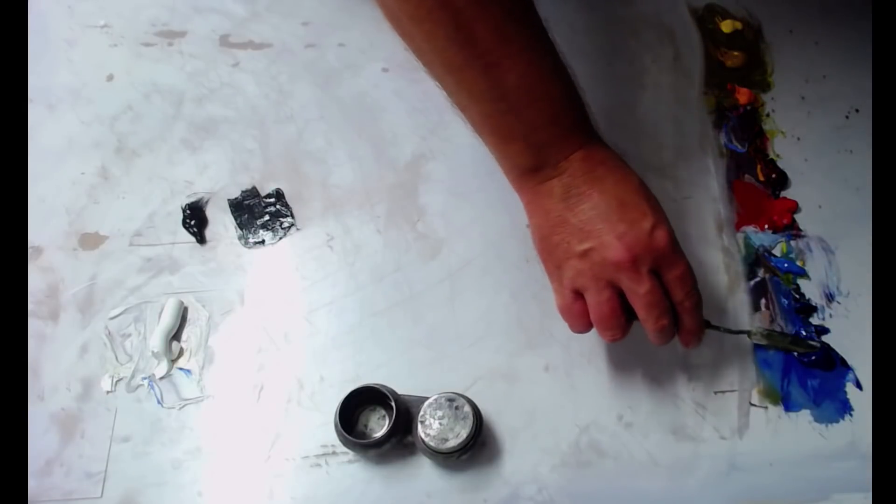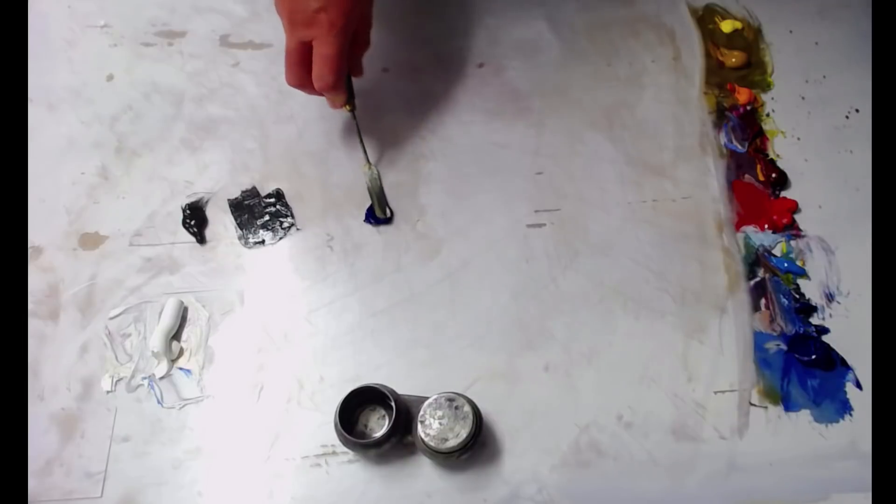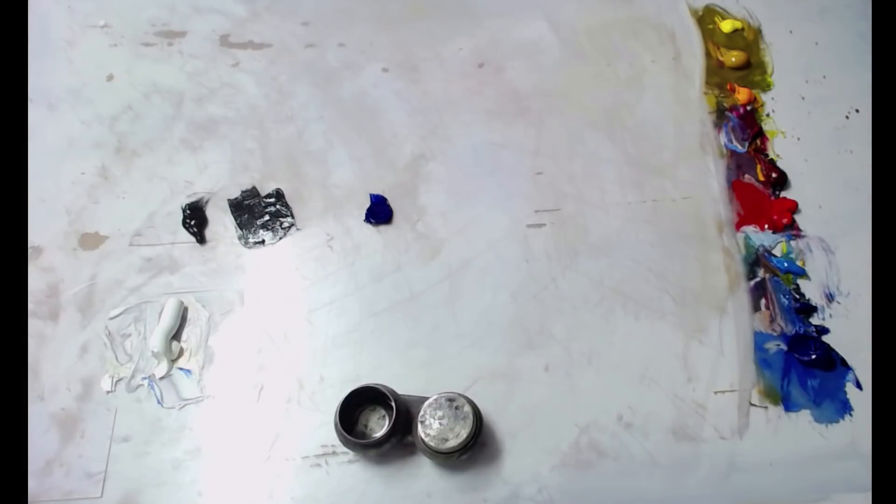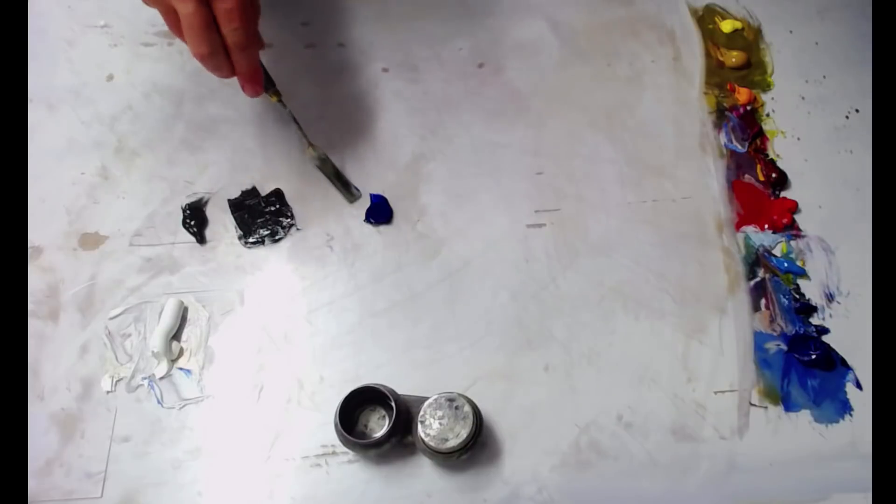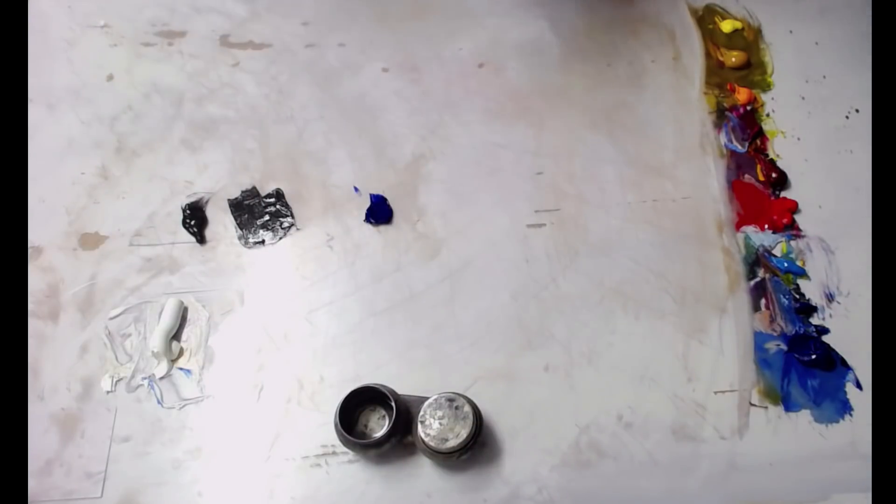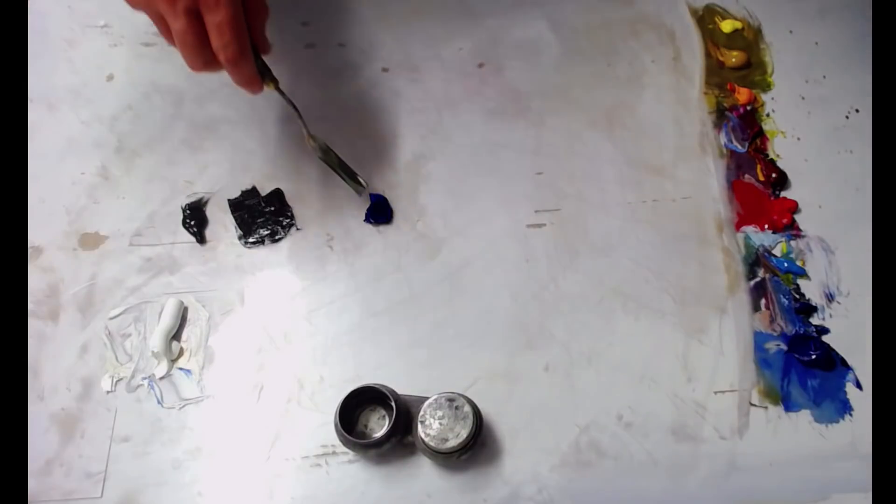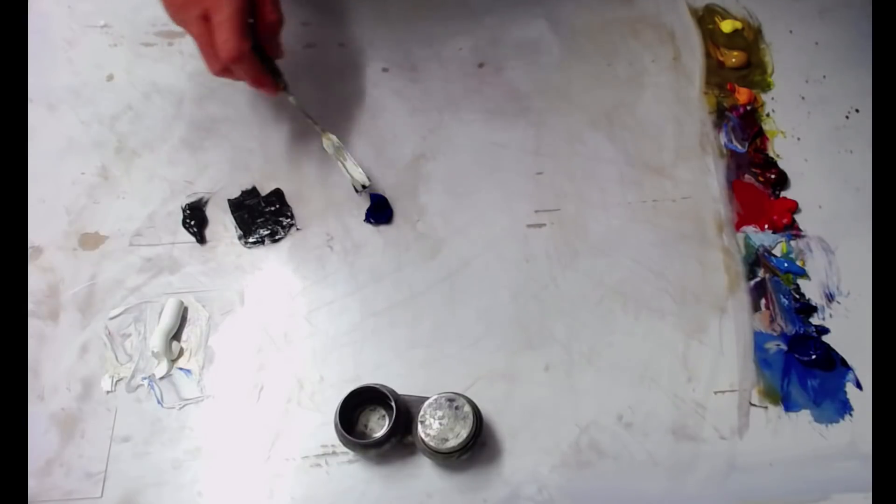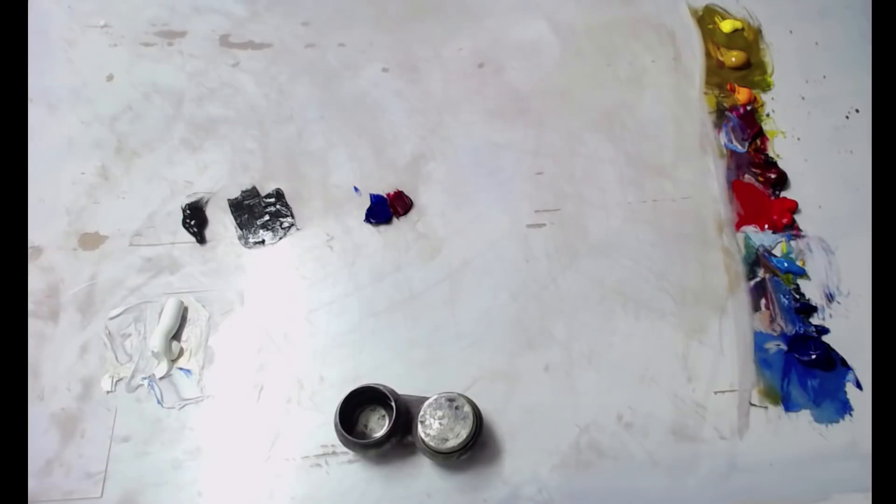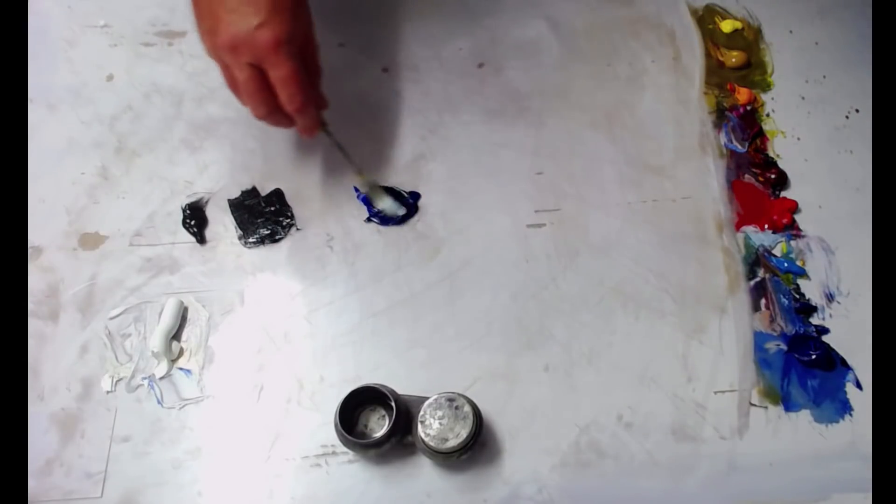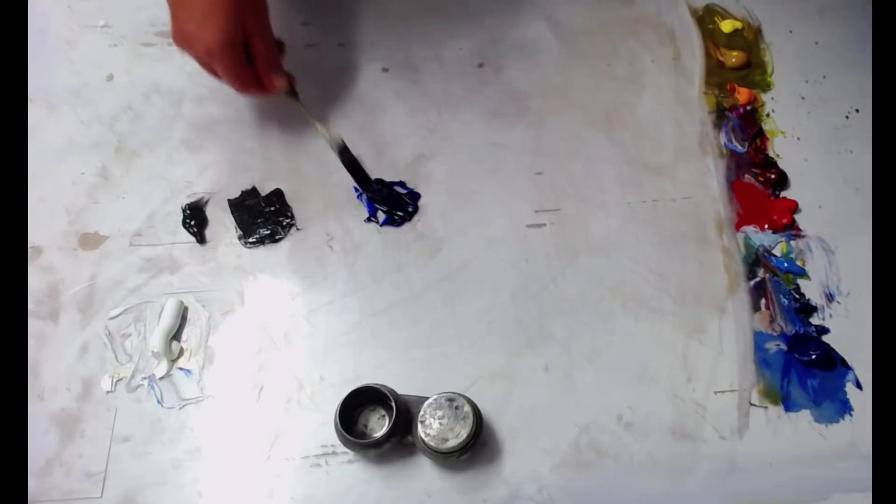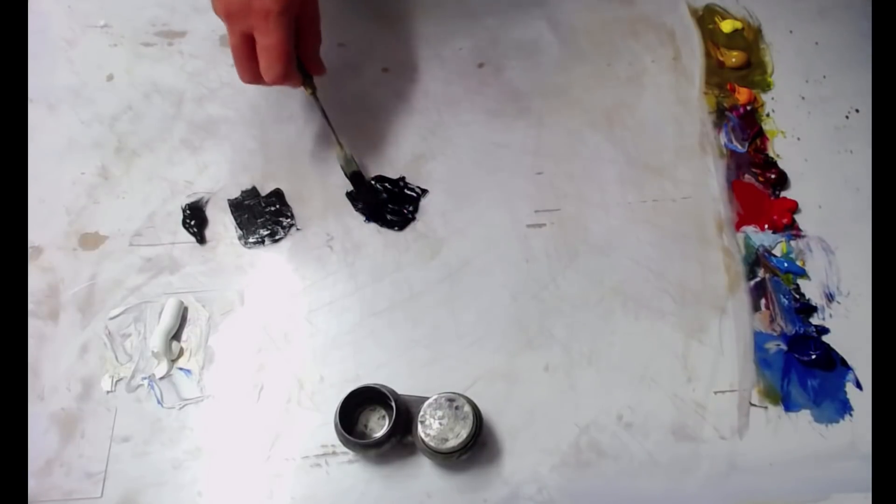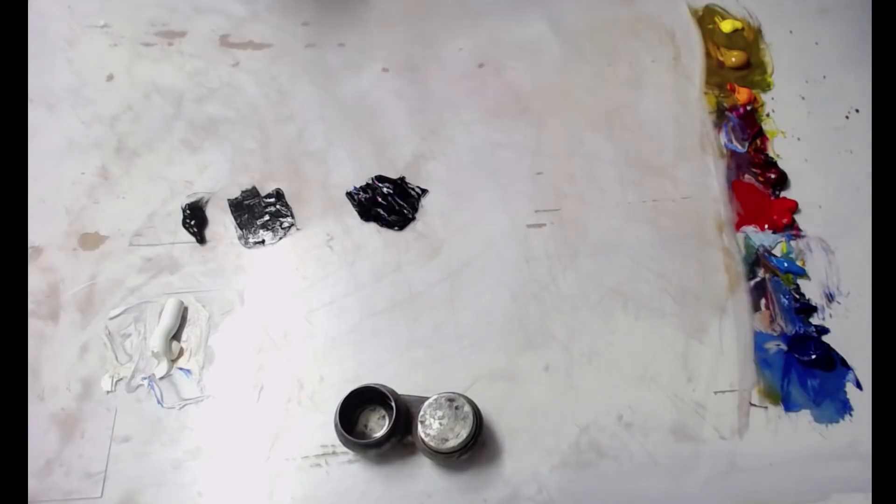The way I recommend to mix a dark is to take your ultramarine blue, and I'll just pop that there. Now, that's already a dark value. If we were to convert this to a black and white shot, you would see straight away that that is a dark value, that ultramarine blue. If we now add the alizarin crimson or permanent crimson to that, I'll pop that beside there. When I mix those two together, what you'll find is that that's going to go really dark.